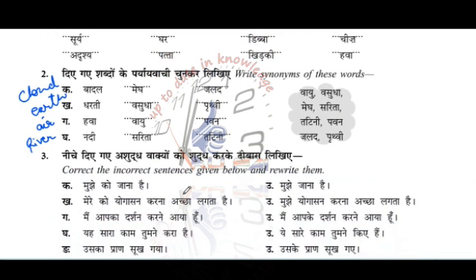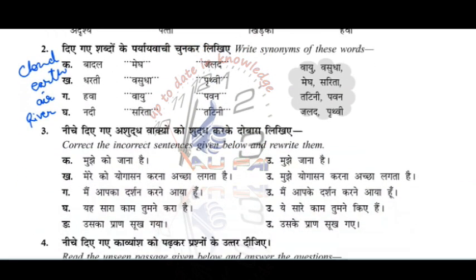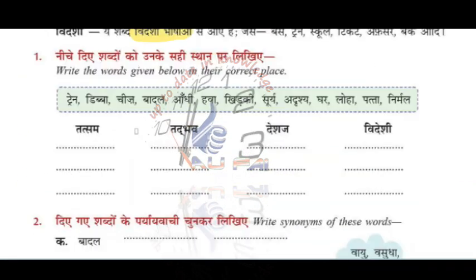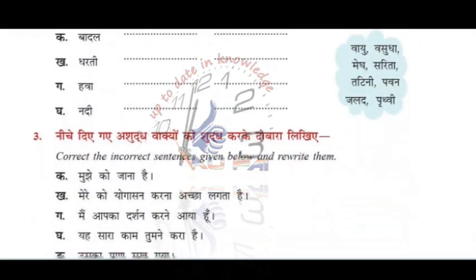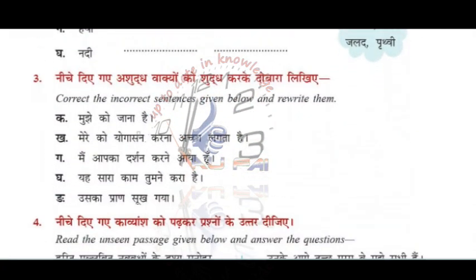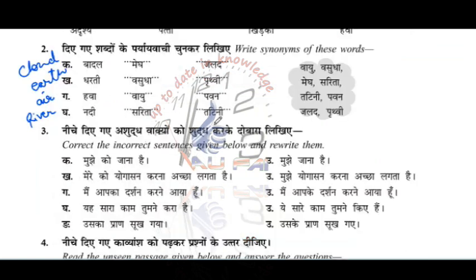Next exercise: correct the incorrect sentences. The correct answer for the first one is 'Mujhe jana hai.' Next: 'Mereko yogdan karna achcha lagta hai' — Mereko should be changed to Mujhe. So the correct sentence is 'Mujhe yogdan karna achcha lagta hai.'